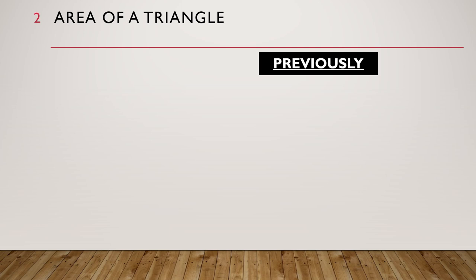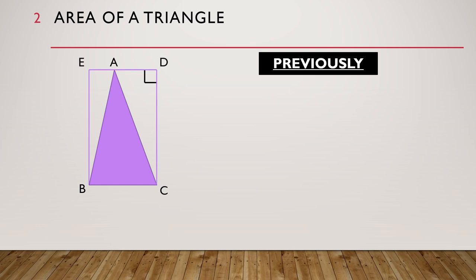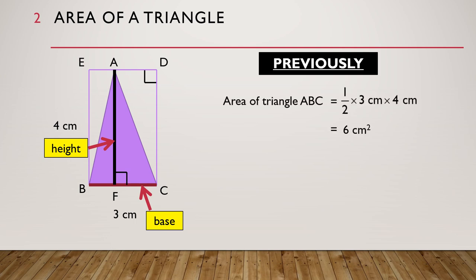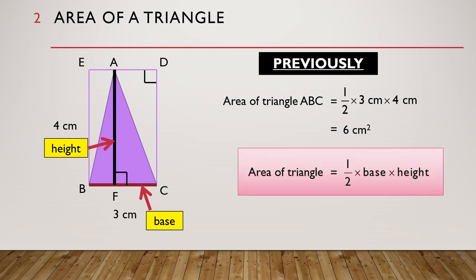Previously on Area of a Triangle, we saw a triangle ABC and we drew the related rectangle BCDE around it. BC is the base of the triangle and line AF is the height. So if the base is 3 centimeters and the height is 4 centimeters, then the area of triangle ABC is equal to half times 3 centimeters times 4 centimeters, which is equal to 6 square centimeters. We also saw the formula: Area of a Triangle is equal to half times base times height.